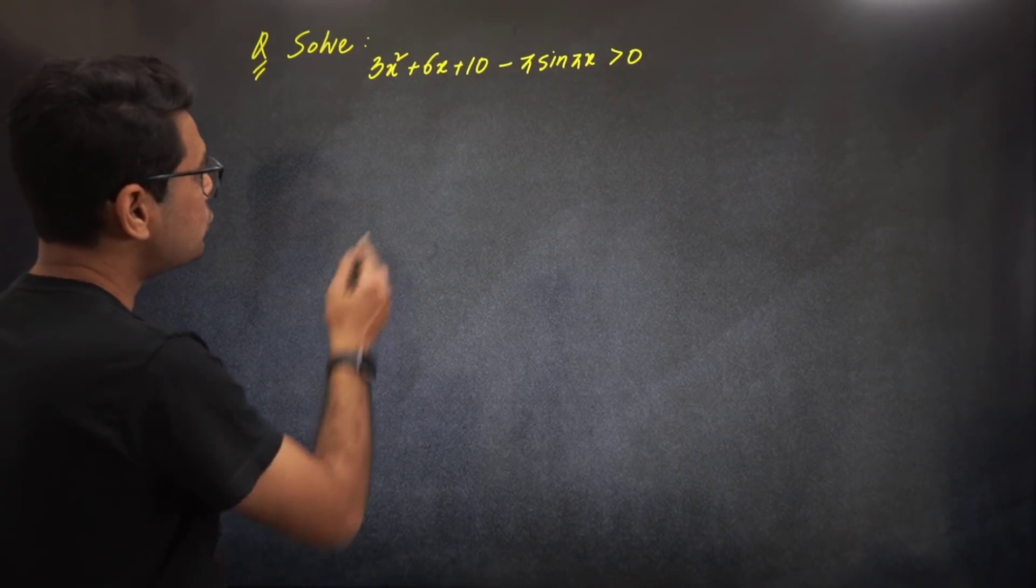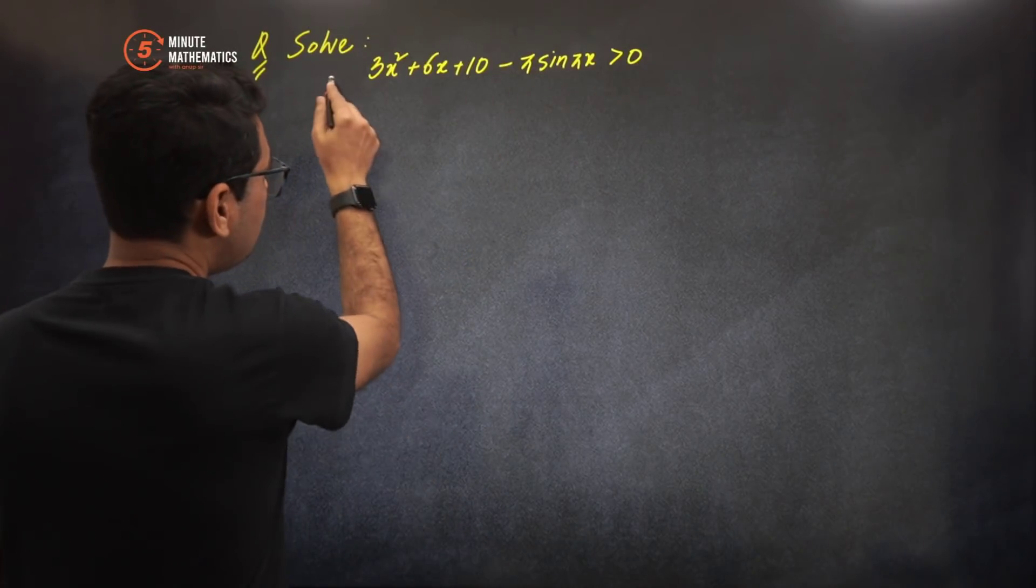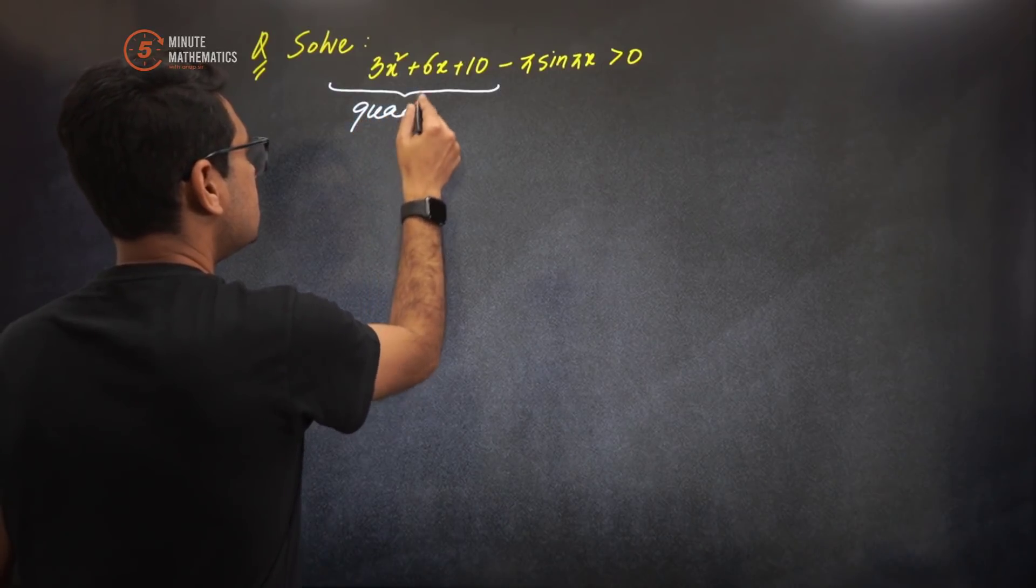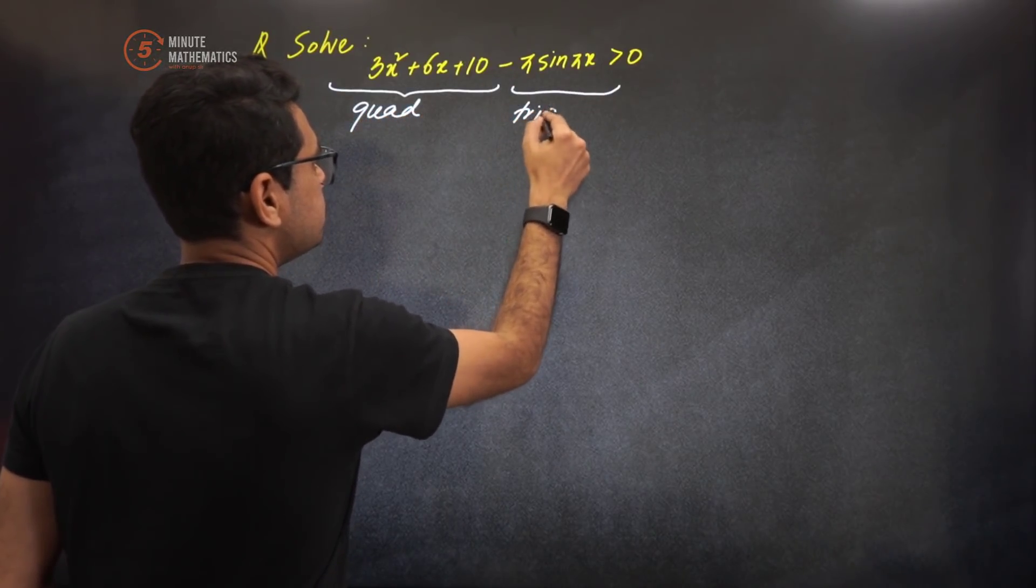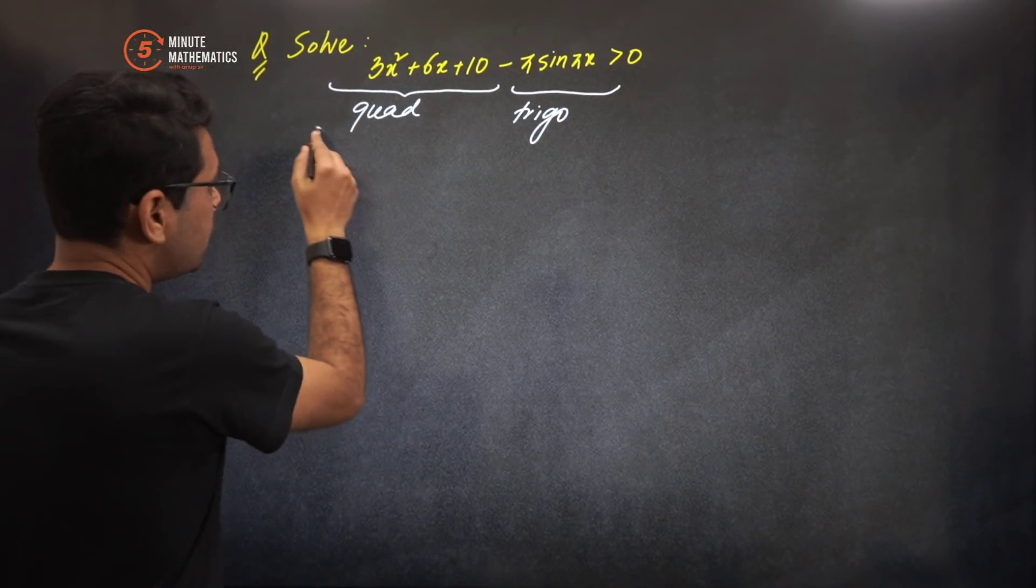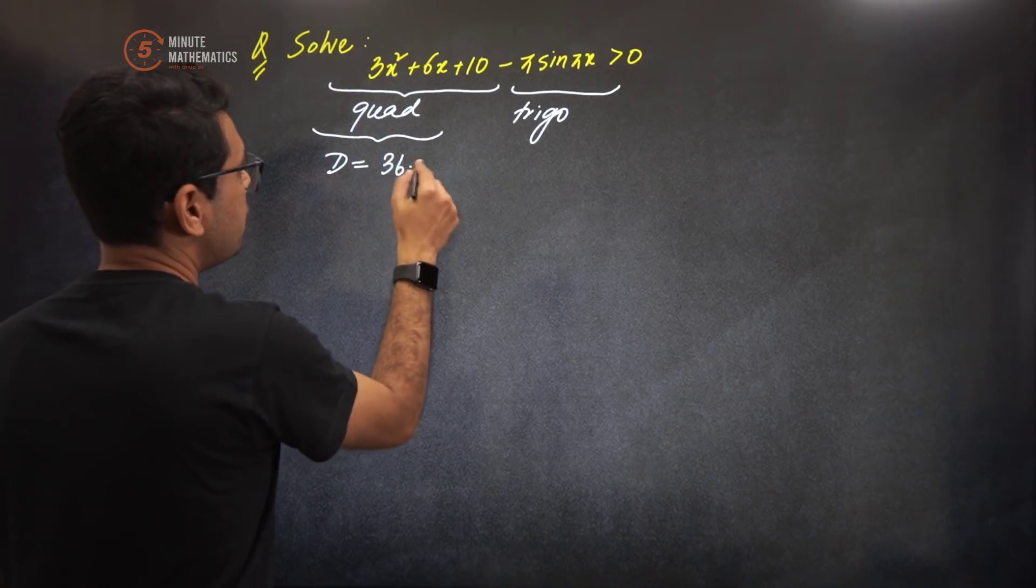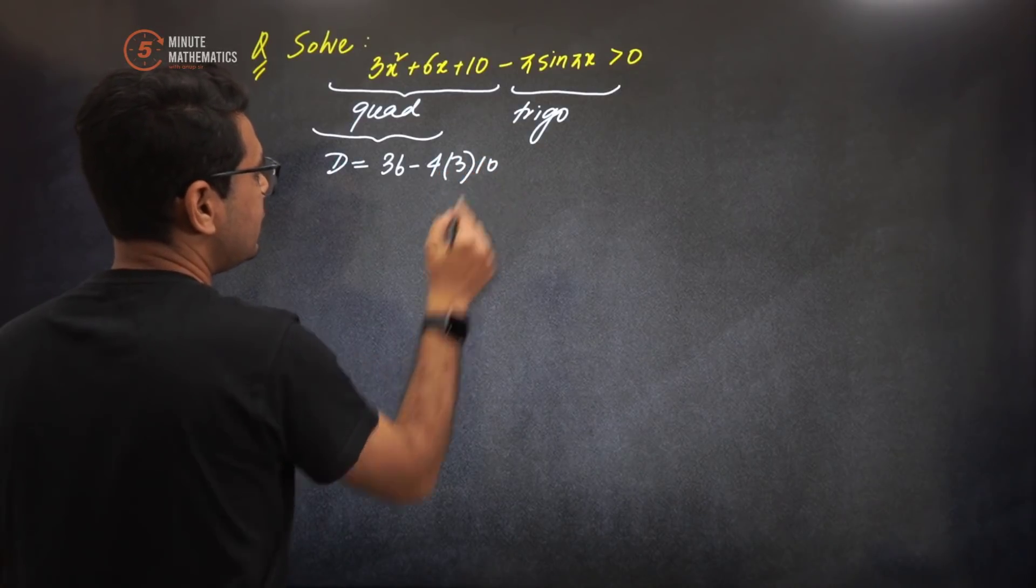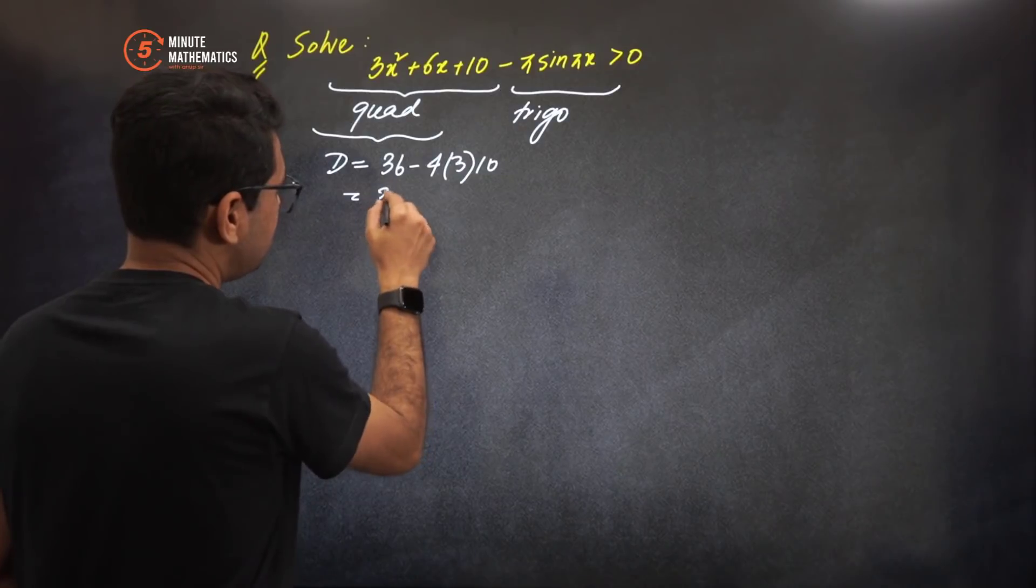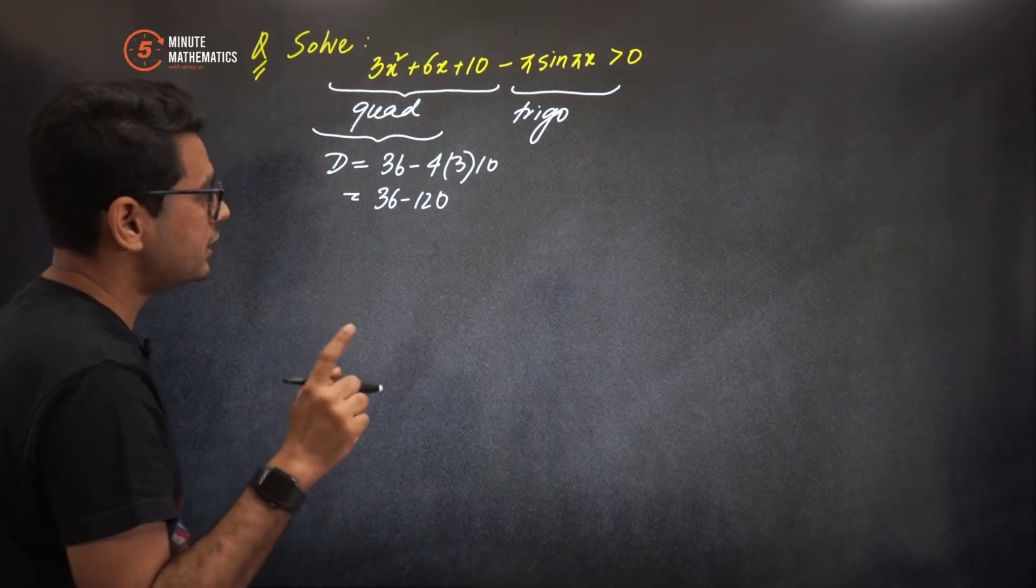Let's take an example problem to understand this concept. So this question is 3x² + 6x + 10 - π sin(π/x) times this. There are two components here - notice this is quadratic and this is trigonometric. The quadratic, it's not touching the x-axis. So if we look at the quadratic first, check its discriminant d. D is 36 - b² minus 4 into 3 into 10.